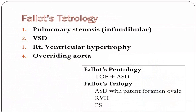If a person has TOF with an ASD, we call it pentology. Fallot's triology consists of ASD with patent foramen ovale, right ventricular hypertrophy, and pulmonary stenosis — with no VSD. If there is VSD, ASD, pulmonary stenosis, RVH, and overriding aorta, that is pentology — TOF plus ASD equals pentology.